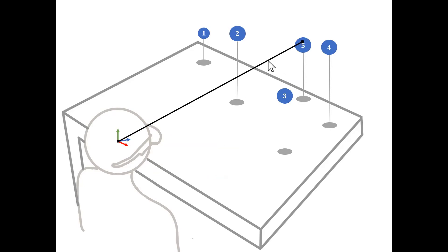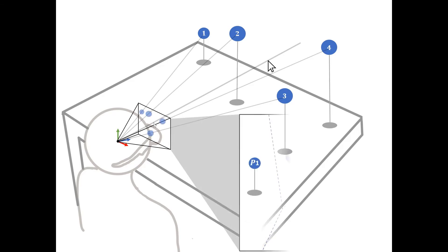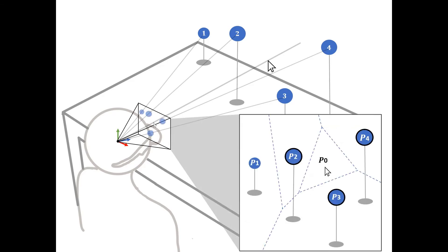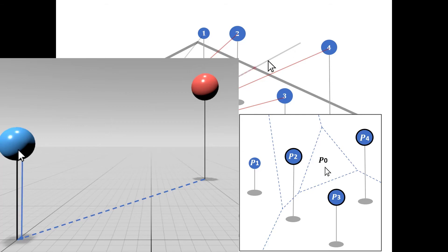If the cursor array intersects with an object, we set the cursor depth to be the depth of the closest intersection. If not, we project the objects into a voronoi diagram and use the objects nearby to interpolate the cursor depth.